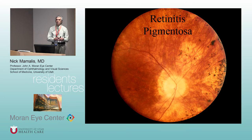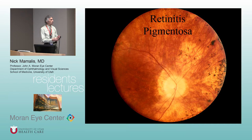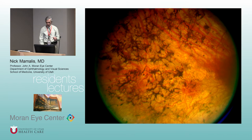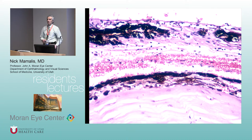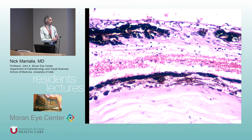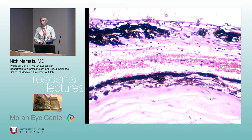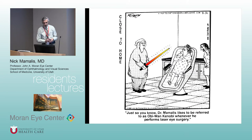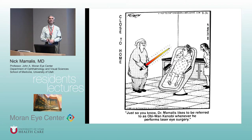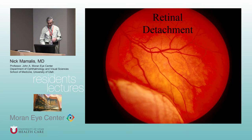Retinitis pigmentosa findings: waxy pallor of the disc, marked attenuation of vessels, and bony spicule pigment. The bony spicule pattern occurs because RPE pigment granules get released and deposit around the vessels, outlining them.